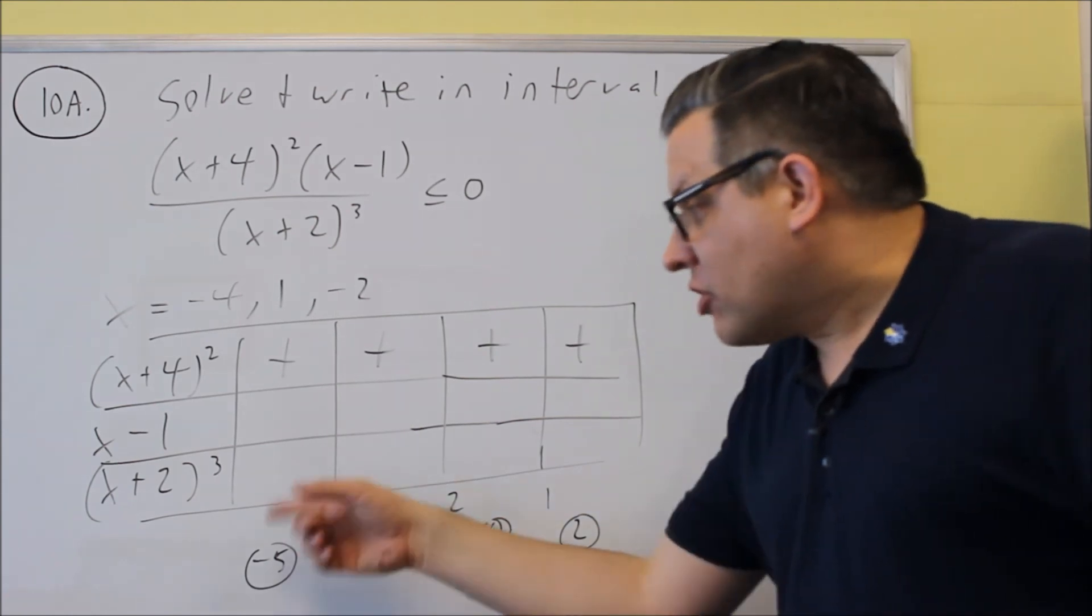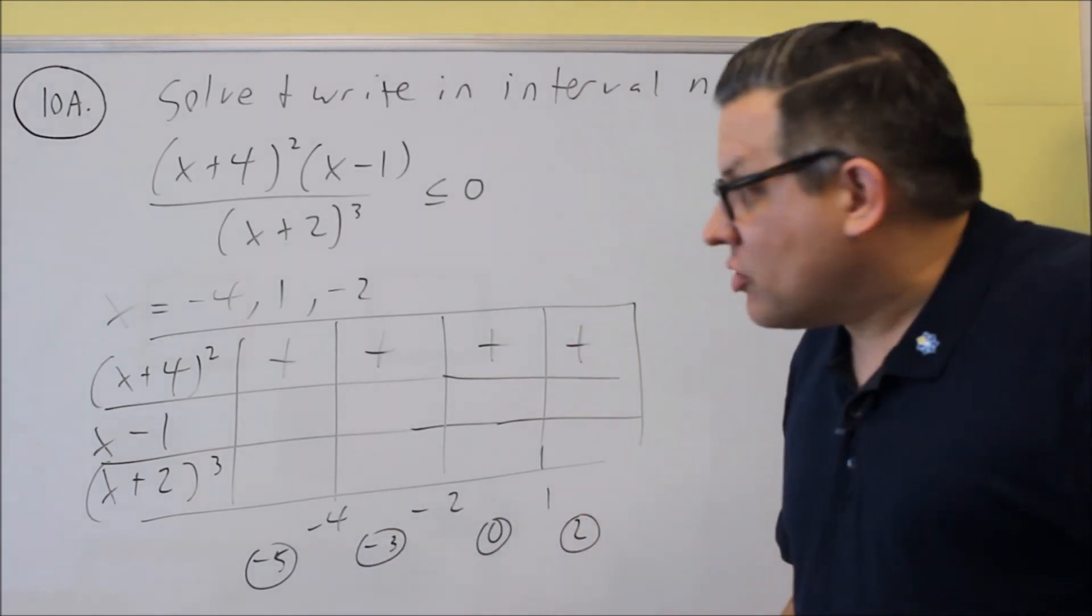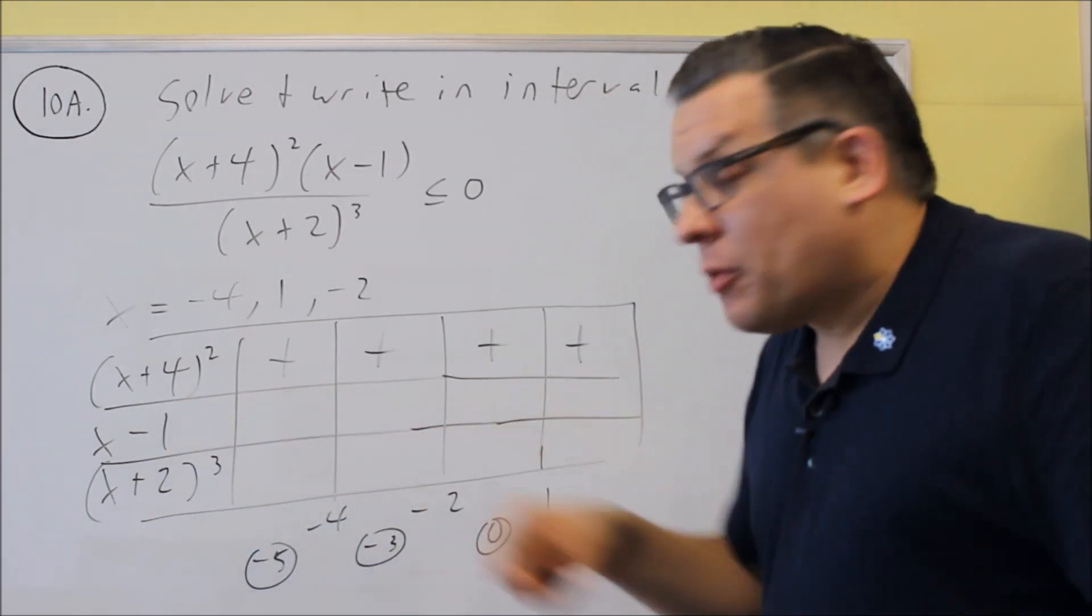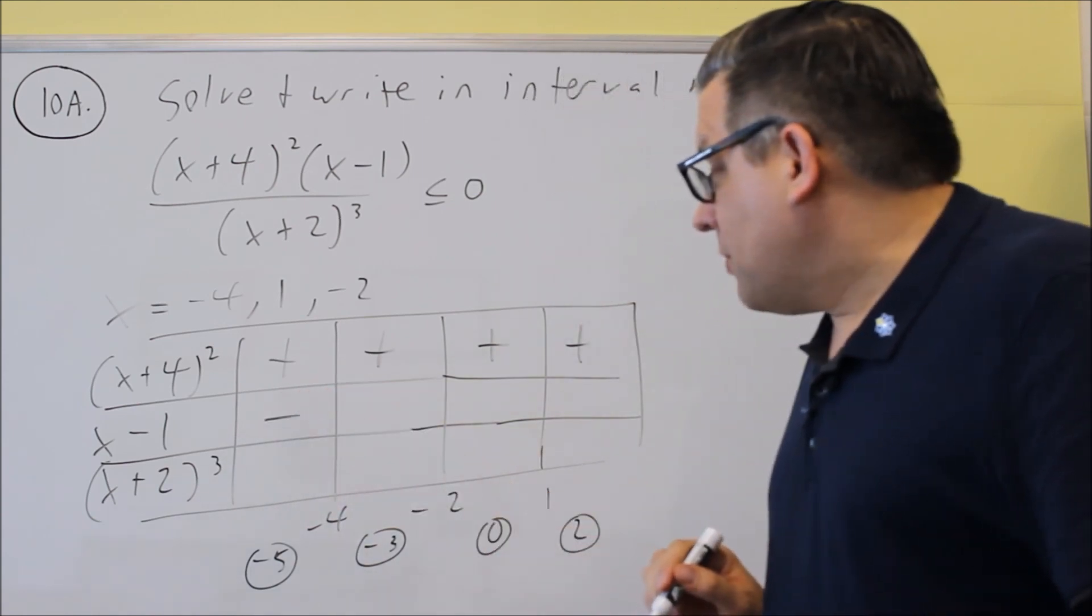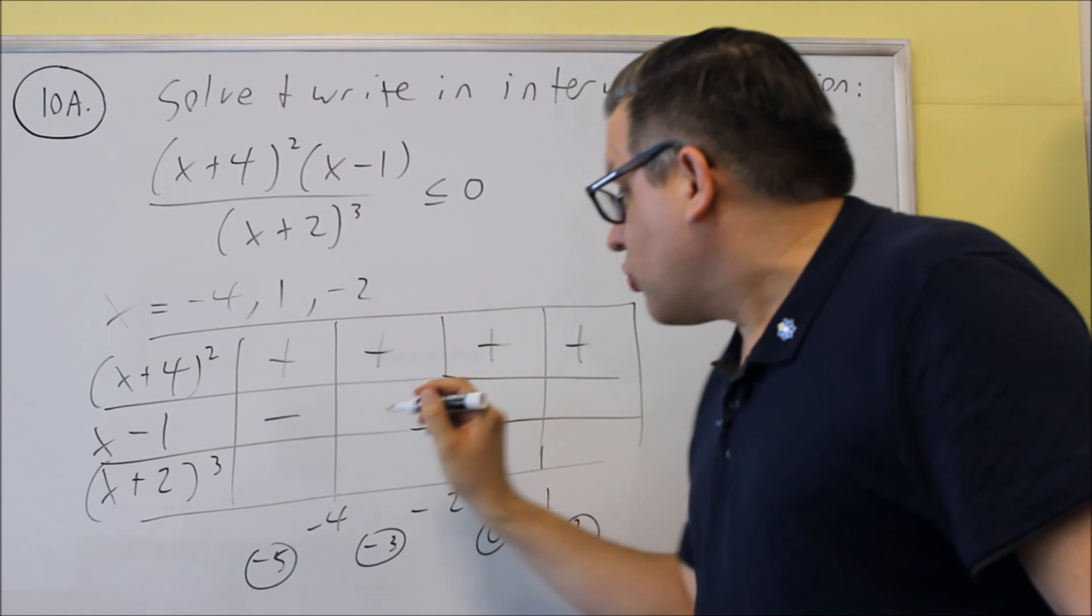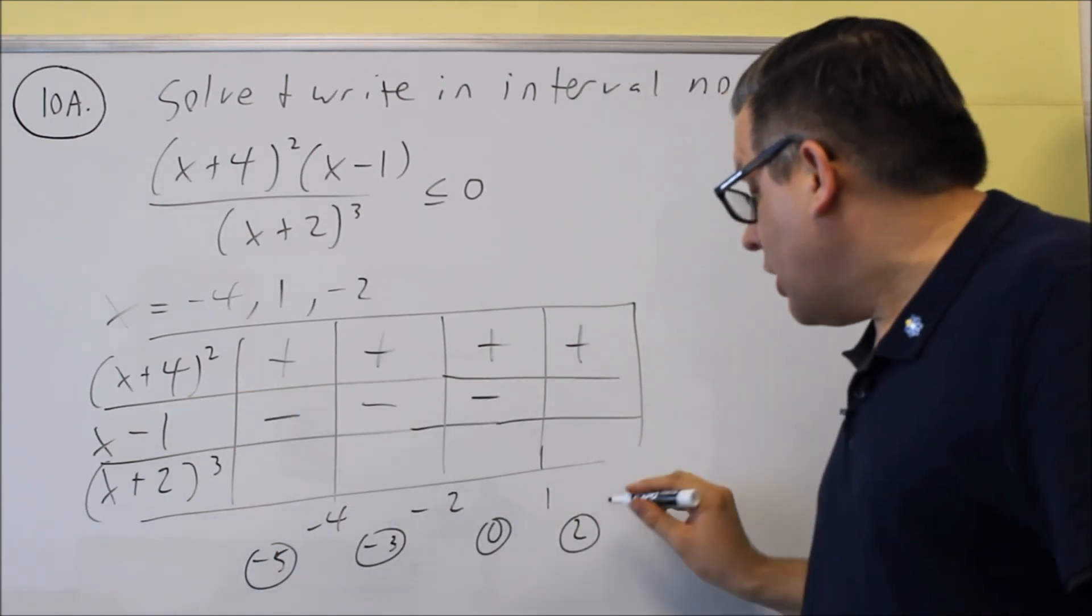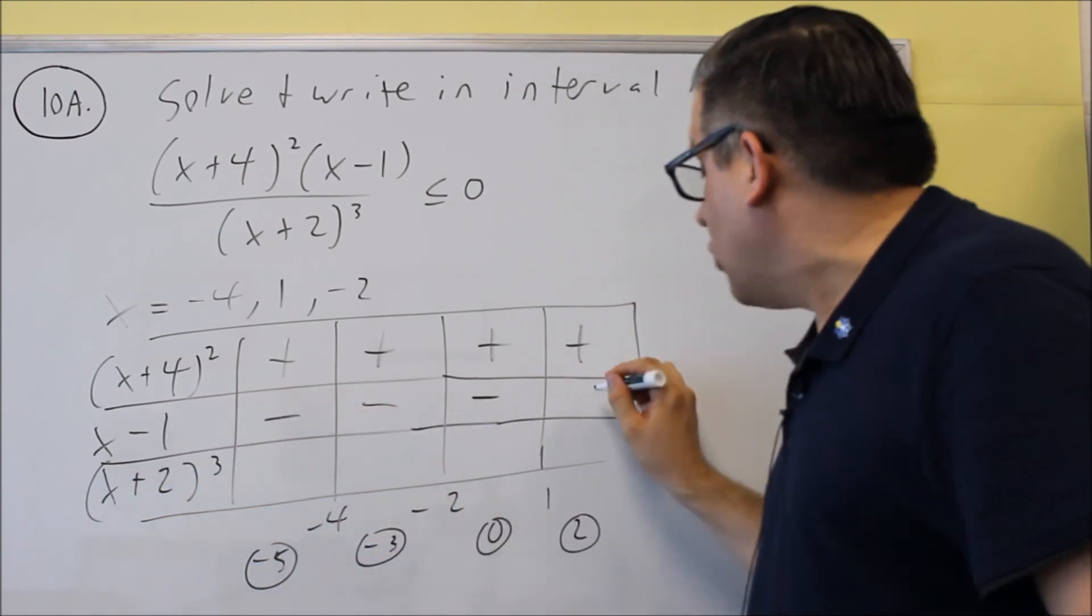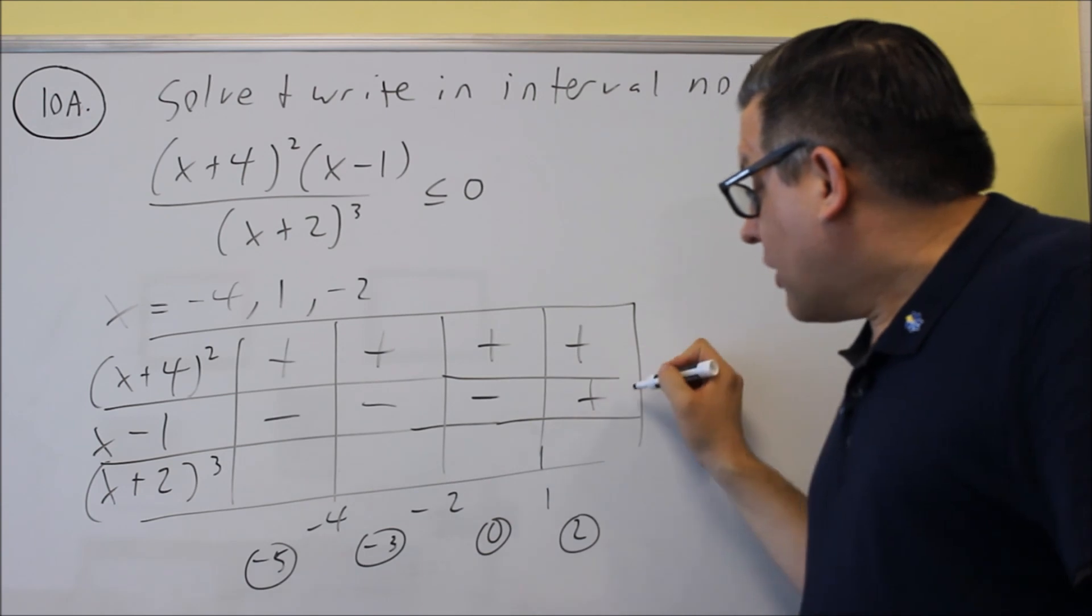Now if it's an odd power, I do have to check it because if I take a negative number to an odd power, it'll be negative. So I still have to check these other ones. Negative 5, I'm going to put in here, negative 5 minus 1, that would be a negative number. So let's just do this whole column. Negative 3 minus 1, that's negative. Negative, 0 minus 1, negative. And then if I put a 2 in there, 2 minus 1 is positive. So I did that whole row and we got that.